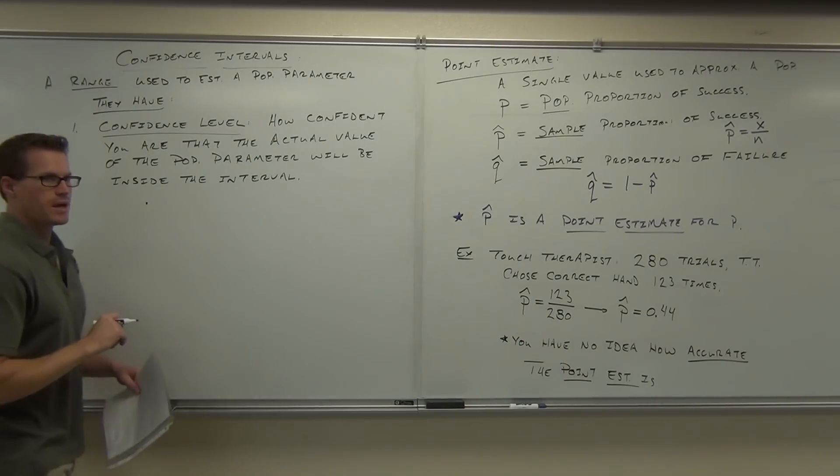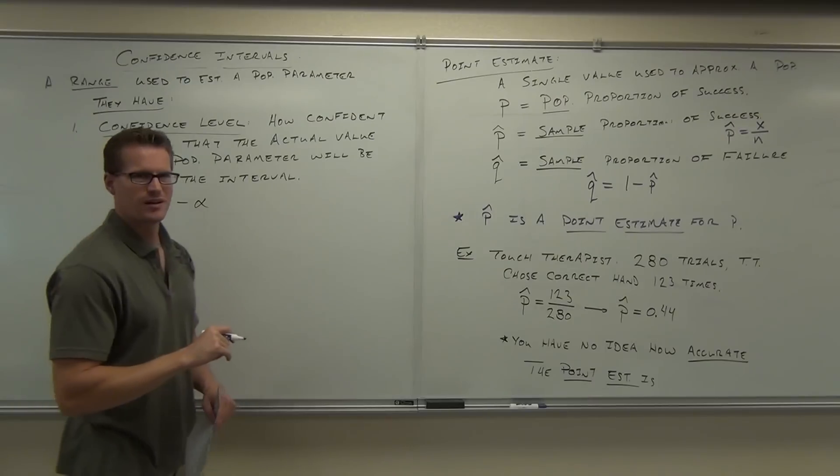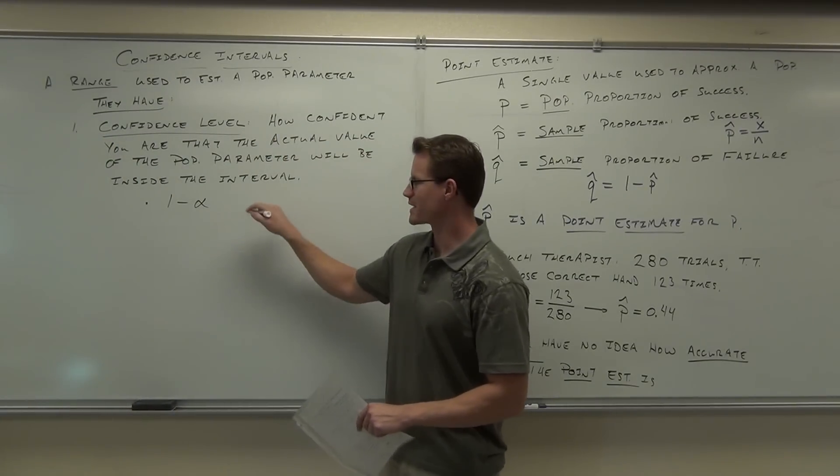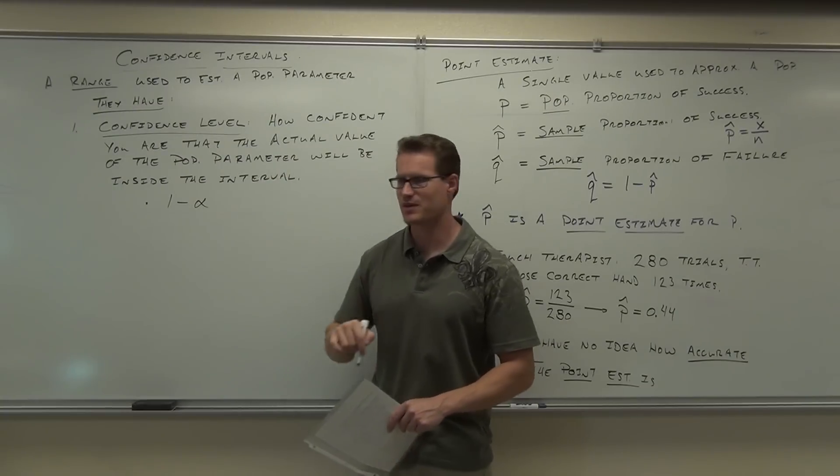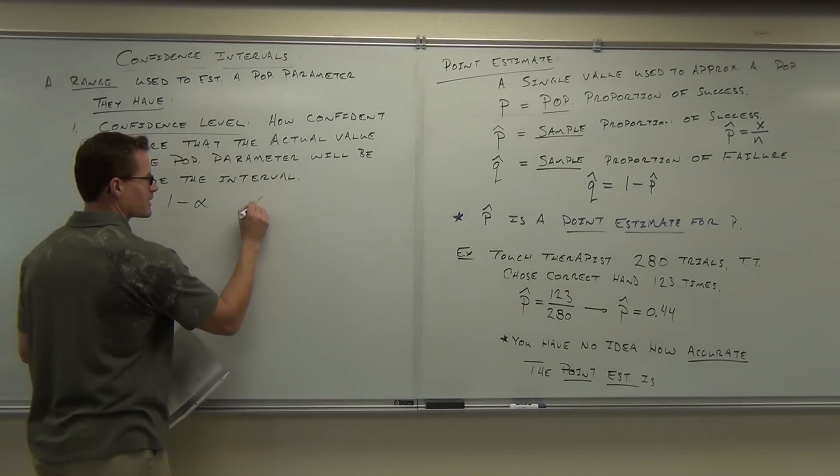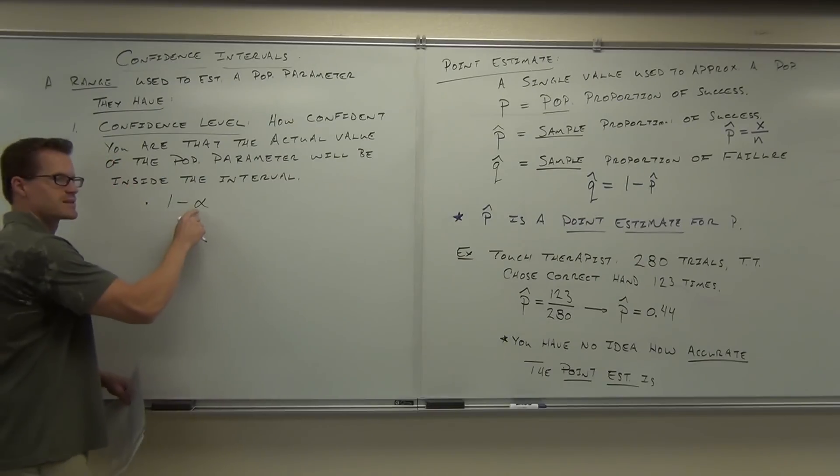By the way, this confidence level is expressed as 1 minus this weird letter. It looks almost like a fish, that thing. It's like an X if you draw Xs real fast sometimes. Actually, it's supposed to look real pretty like that, but I never do it. Not that good. 1 minus, that's called an alpha. That right there is alpha.